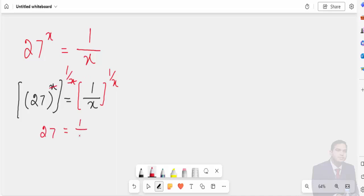Can I write 27 as a cube of 3? That is equal to 1 over x raised to 1 over x. Now we have 3 to the power 3 equals 1 over x to the power 1 over x.